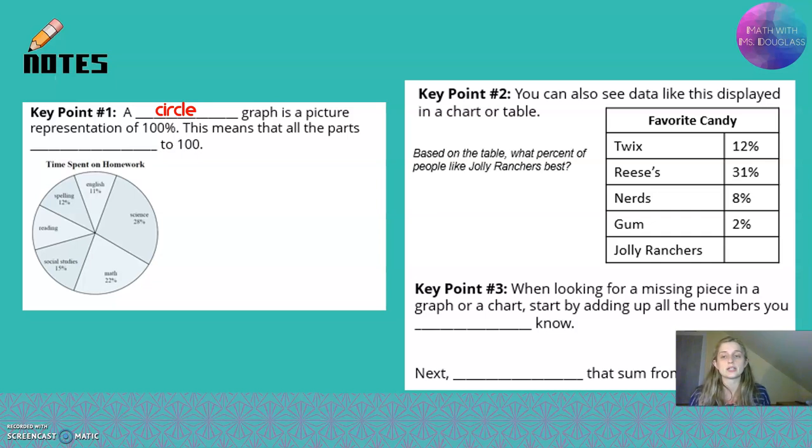So when we are talking about a circle graph, the entire circle represents 100%. We're gonna be looking at parts of the circle and I'll tell you the percentages those represent, but usually you're gonna have to find the missing part. So all the parts will add up to 100 and that's something you really need to know in order to solve these problems.